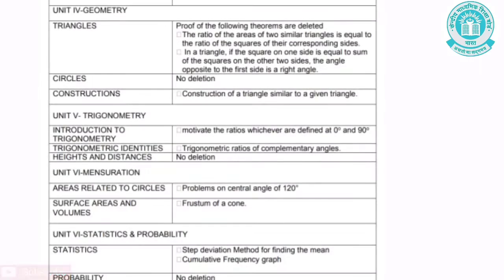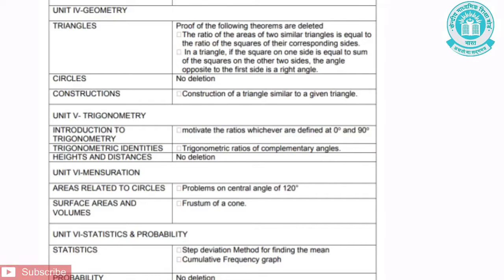Under Unit 4, that is Geometry, the chapter is Triangles. The topics removed are proofs of the following theorems: first, the ratio of the areas of two similar triangles is equal to the ratio of the squares of their corresponding sides; second, in a triangle, if the square of one side is equal to the sum of squares of the other two sides, the angle opposite to the first side is a right angle.